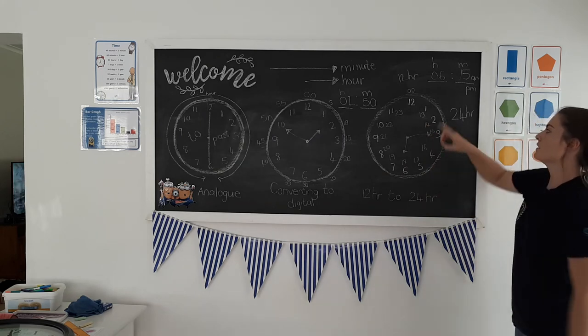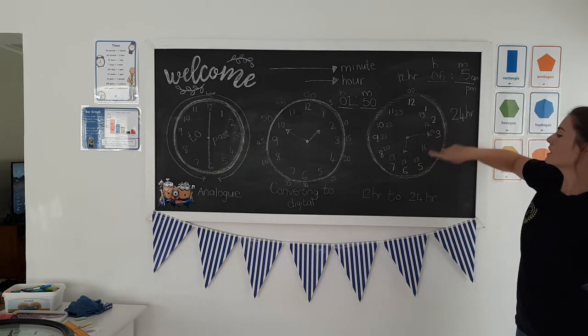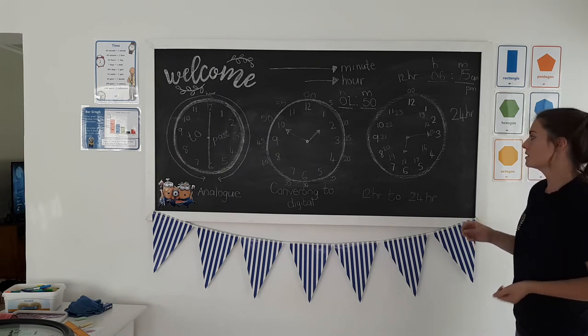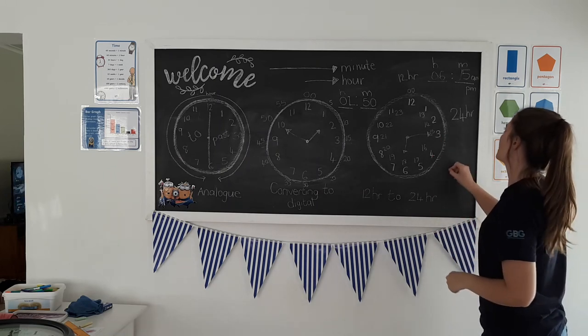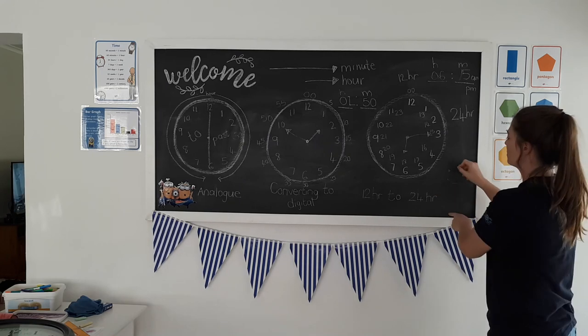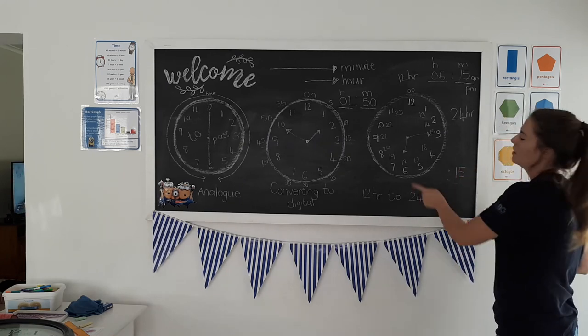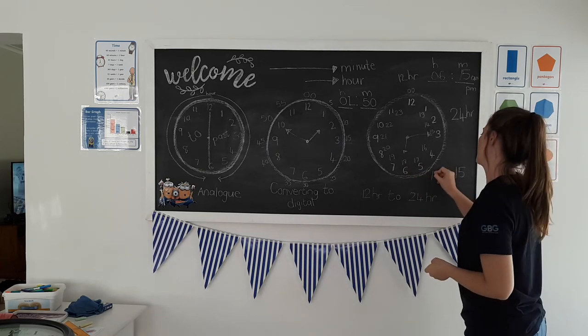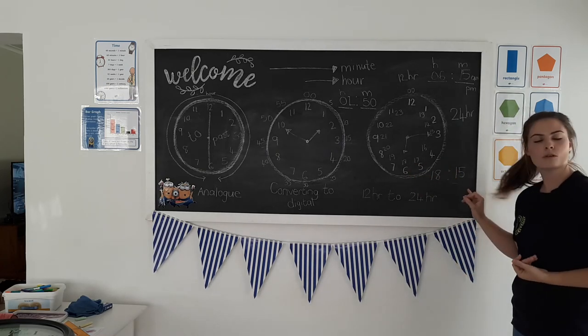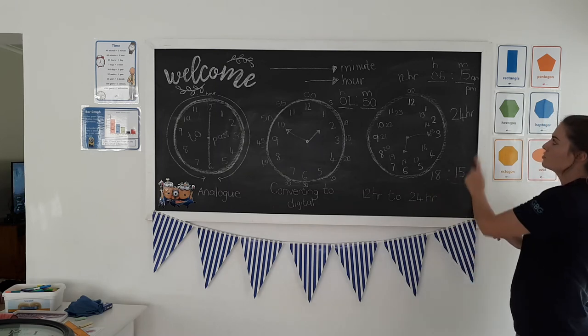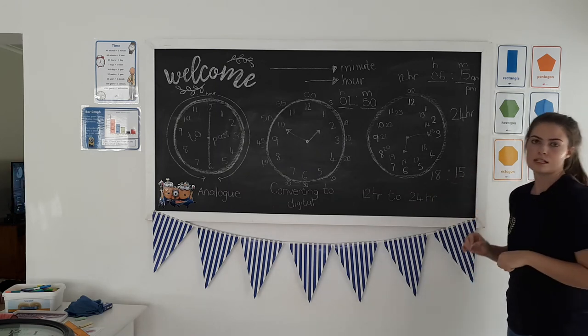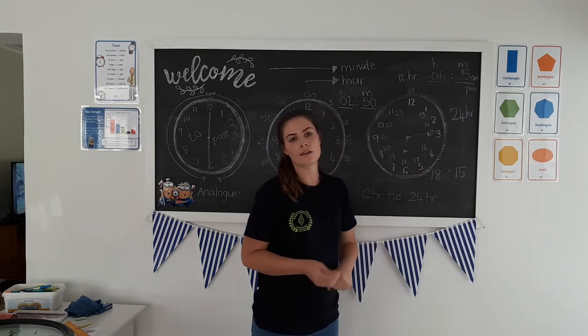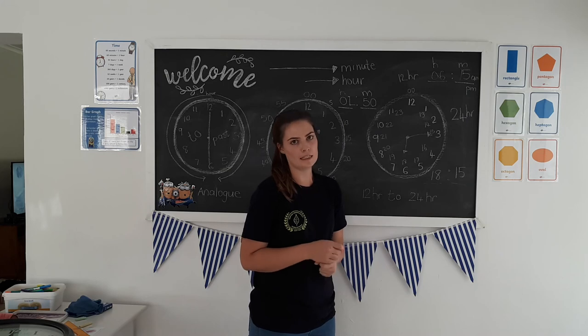So if I wanted to change my quarter past six to being in the evening, the later one, the minutes would stay the same. So it's still quarter past six. When I use 24-hour format, I don't need to write AM or PM simply because the number itself tells me whether it's in the morning or evening.